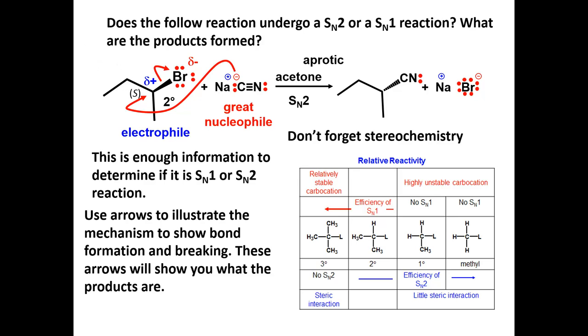And since an SN2 reaction occurs from the backside of the carbon-leaving group sigma bond, inversion occurs at the stereogenic carbon to produce the R product.